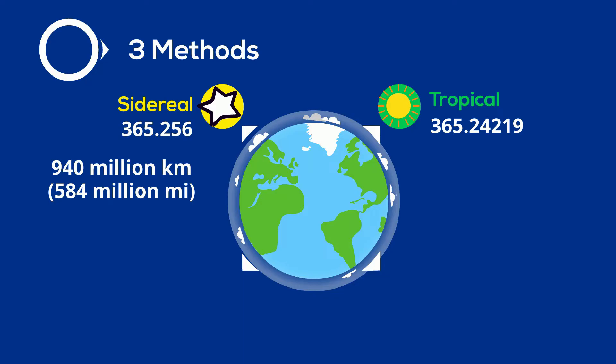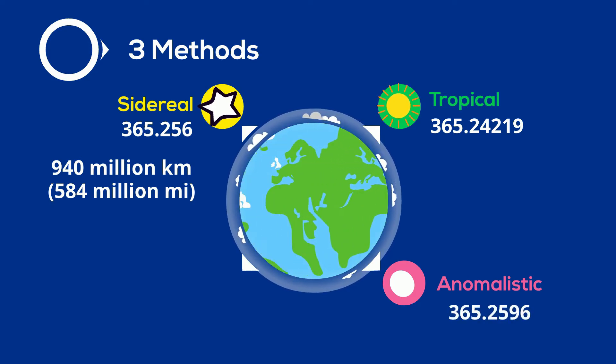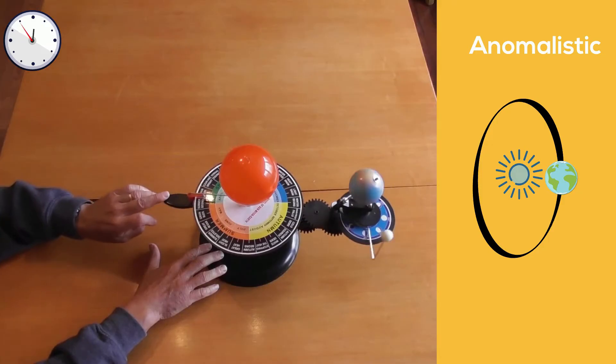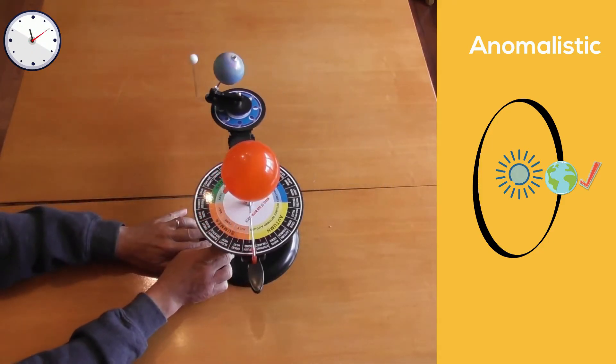And another method is the anomalistic year, which is 365.2596 days. And it's the time from one perihelion to the next perihelion. And the perihelion is the point of the orbit of the Earth in which it is closest to the Sun.